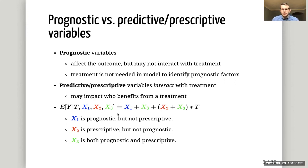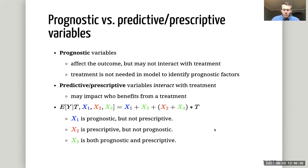Prognostic variables are ones that impact the outcome but may not interact with the treatment. If you want to identify the prognostic factors, it's not needed to include the treatment in a model — they're inherently not of interest when our interest is in understanding heterogeneity of effect. Heterogeneity of effect is completely driven by so-called prescriptive variables, which interact with the treatment. Here we can see that X2 and X3 are prescriptive variables, X1 is prognostic but not prescriptive, and X3 is prognostic in addition to being prescriptive. Variables can take multiple roles, and we're really interested in identifying these prescriptive variables.